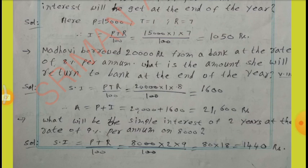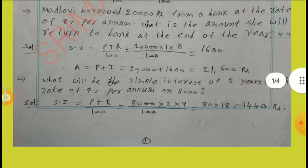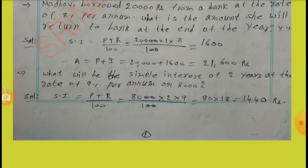What will be the simple interest for 2 years at the rate of 9% per annum on Rs.8,000? Solution: P equal to 8,000, T equal to 2 years, R equal to 9. By substituting the values in the formula I equal to PTR by 100, we get the answer Rs.1,440.